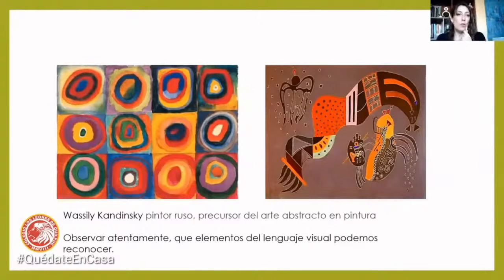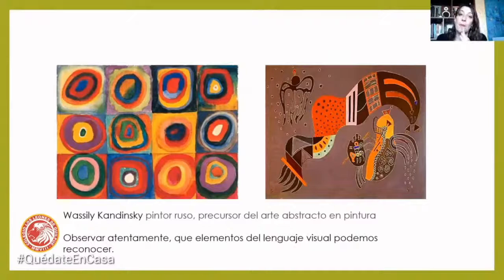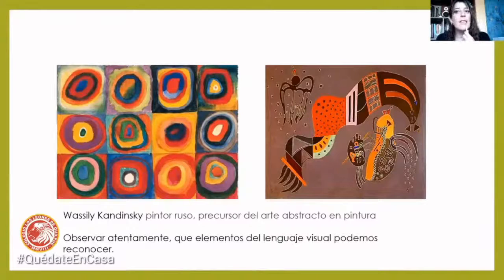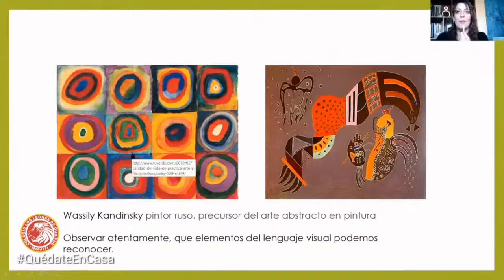Acá tenemos otro pintor, él es un pintor ruso que se llama Vasily Kandinsky, él trabajaba la pintura abstracta. ¿Qué es la pintura abstracta? Es la pintura no figurativa, esa que no tiene una forma real, sino que pueden ser imágenes imaginadas, pero también pueden ser salidas de la geometría, todo lo que es el lenguaje visual que nosotros conocemos. Y en estas imágenes también los invito a ver si tienen algo de similitud con las imágenes del microscopio. ¿Encuentran que se parecen en algo? Los colores, las formas, ¿tendrán algún parecido a lo que nosotros vimos del microscopio?